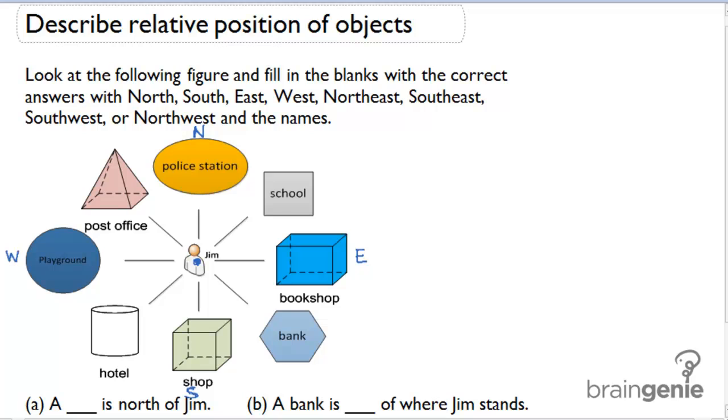The way I remember west and east is that they spell the word 'we': W-E. And then we can figure out the rest of the directions. In between north and east is northeast. In between south and east is southeast. In between south and west is southwest. And in between north and west is northwest.